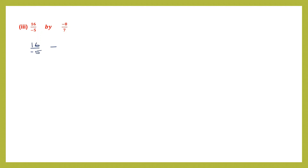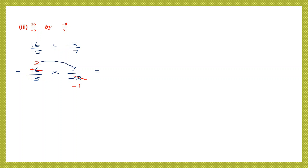Question 3: 16 by minus 5 divided by minus 8 by 7. Write 16 by minus 5 as it is; division changes to multiplication; reciprocal of minus 8 by 7 becomes 7 by minus 8. We cancel 8 and 16 both by 8, giving minus 1 and 2.